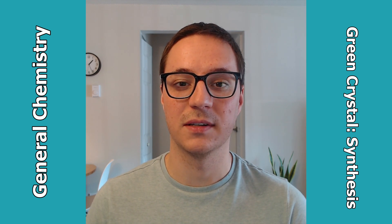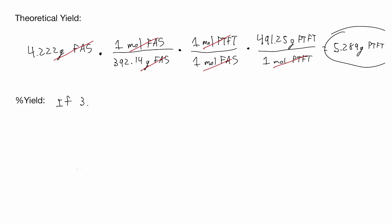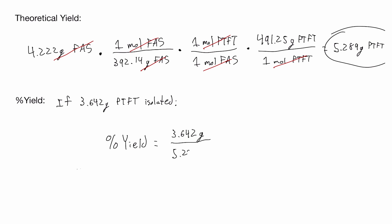To find a percent yield, you'll need to know the actual amount of product obtained after the reaction. In this example, 3.642 grams of PTFT green crystals were obtained. Dividing that value by the theoretical yield of 5.289 grams and multiplying by 100 gives us a percent yield of 68.86%. You shouldn't be surprised to get a percent yield far below 100% — in fact, it's nearly impossible to get a 100% yield. For this reaction, 68% is pretty good. Since your green crystals will be collected during the next experiment, this week you'll only be able to calculate the theoretical yield, but make sure to calculate the percent yield once you do isolate your crystals.